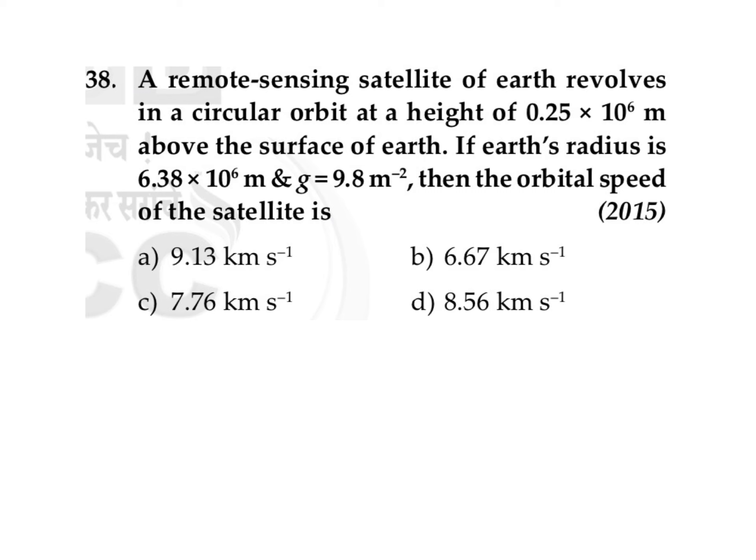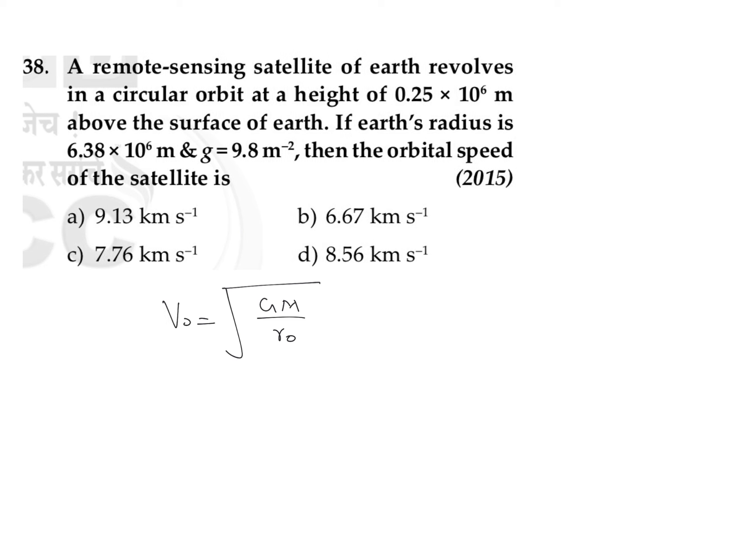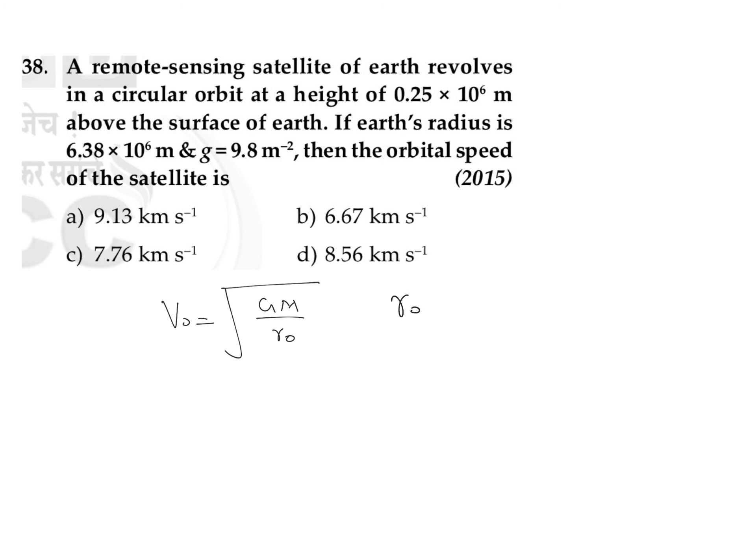So we know the equation for orbital velocity of a satellite. The equation for orbital velocity is root of GM divided by r₀, where r₀ is representing the orbital radius. Here we can write this orbital radius as distance from the center to the satellite.